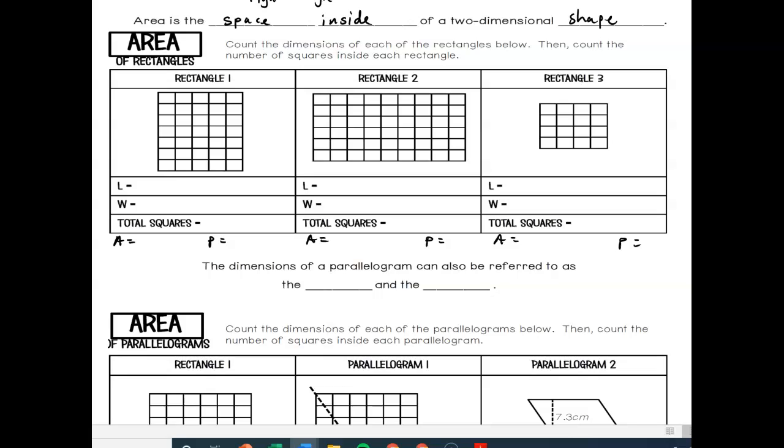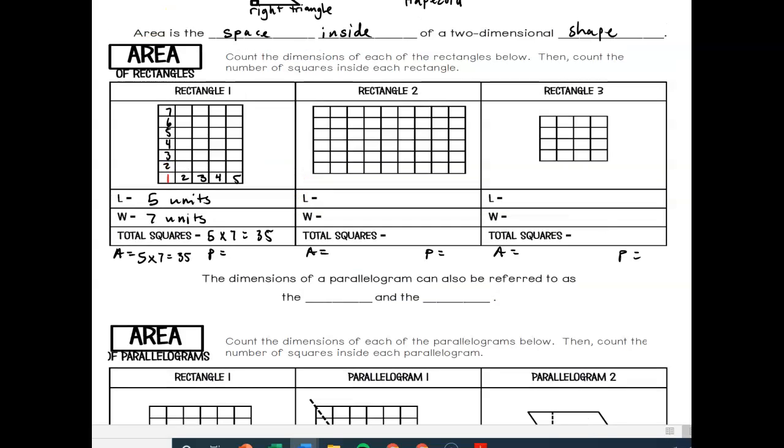To start in rectangle one, we see that we have a length of five units long and a width of seven units long. It doesn't really matter which one you label which. To figure out the total squares, all we're going to do is length times width: five times seven, which is 35 square units. So inside that shape, I have 35 squares. Perimeter is different - that's the outside. To figure out the perimeter, two sides will be five, so two times five plus two sides will be seven, two times seven. That gives me 10 plus 14, which is 24 units.